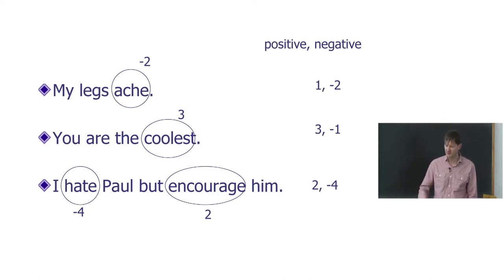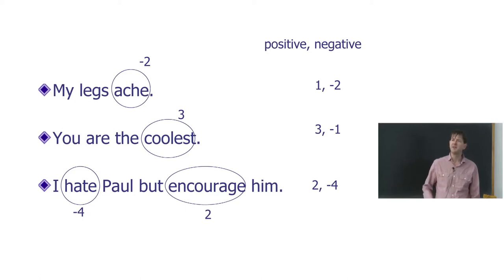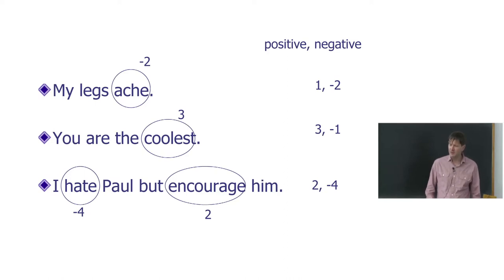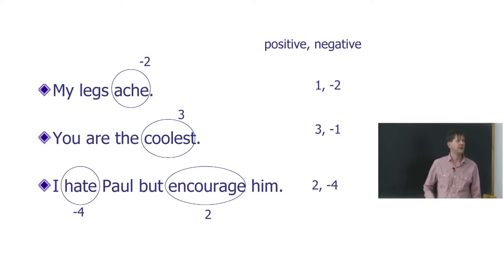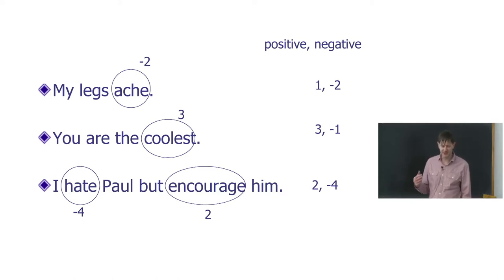So it's a very simple process, and a computer program can apply this rule very quickly to a large amount of text. SentiStrength can process approximately 8,000 texts per second applying this rule and all the other rules. A human coder processes on average one text per minute to give a good reliable code — so the computer is many, many times faster and cheaper.